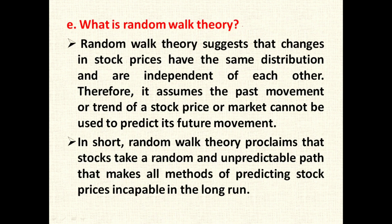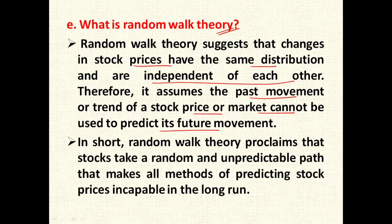What is random walk theory? Random walk theory is discussed alongside EMH, that is efficient market hypothesis. Random walk theory suggests that changes in stock market prices have the same distribution and are independent of each other. Therefore, it assumes that past movement of a stock price or market cannot be used to predict its future movement. In short, random walk theory proclaims that stocks follow a random and unpredictable path, making all methods of predicting stock prices incapable in the long run — prices of stocks are random in nature.